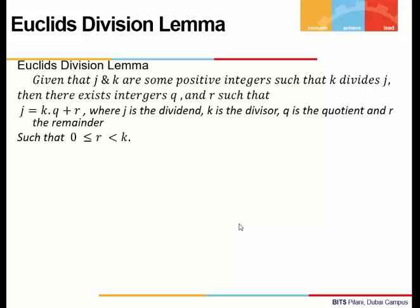Coming to Euclid's Division Lemma. Euclid's Division Lemma says that when we divide any given integer j by another integer k, we can write it as j equals k times q plus r, where j is our dividend, the number being divided; k is the divisor, the integer by which we are dividing; q is the quotient; and r is the remainder. One thing to remember is the remainder is always less than the divisor, but it can be 0. So the remainder is always positive.